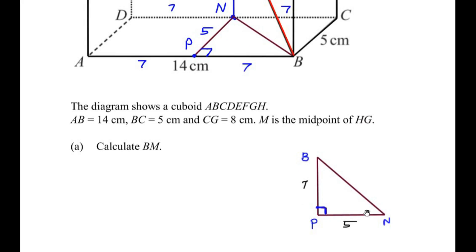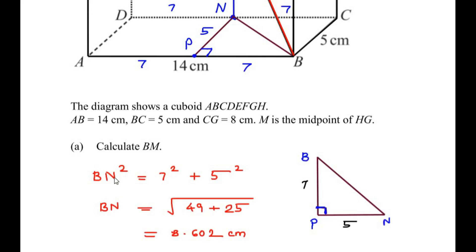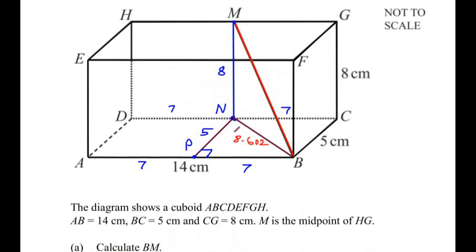We can find the length of BN using the Pythagorean theorem. BN² = 7² + 5², so BN = √(49 + 25) = √74, which gives us BN = 8.602 cm.